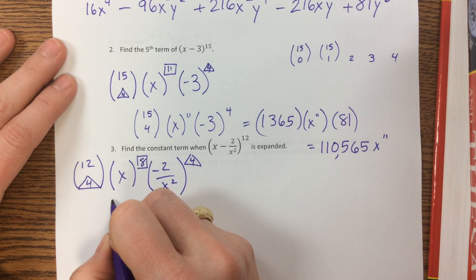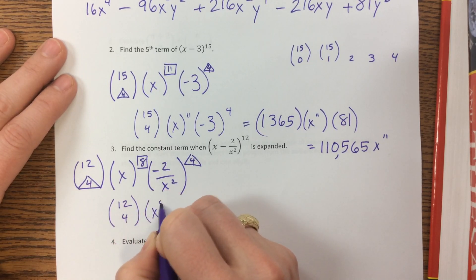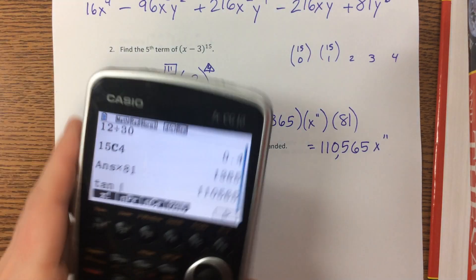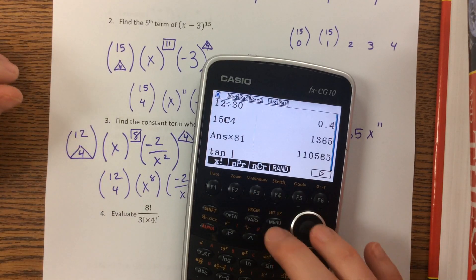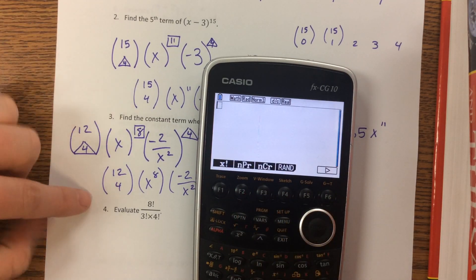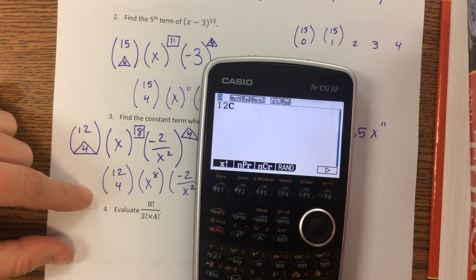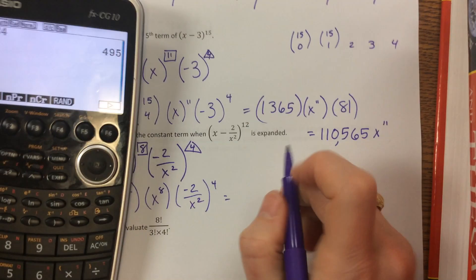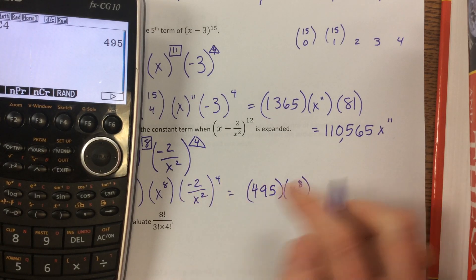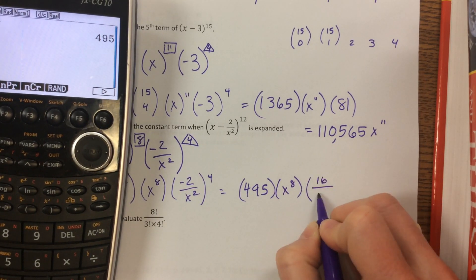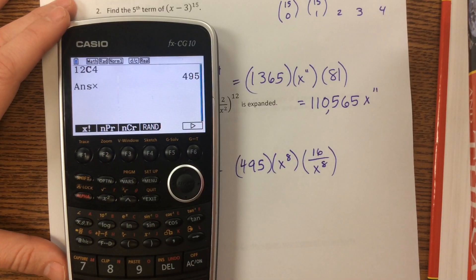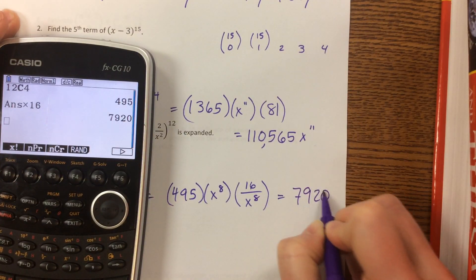So when I want the constant, when I go solve for the constant term, this is 12 choose 4, times x to the 8th, times negative 2 over x squared to the 4th. I'm going to grab my calculator again. Let me delete everything. Okay, it makes me feel better. Options. Scroll over to probability. I'm doing 12 choose 4, this is 495, times x to the 8th. 2 to the 4th power, that's 16, it's a positive now, 16 over x to the 8th. So notice all those x's cancel out, they're gone, and this number times 16 is equal to, so the constant term would be that.